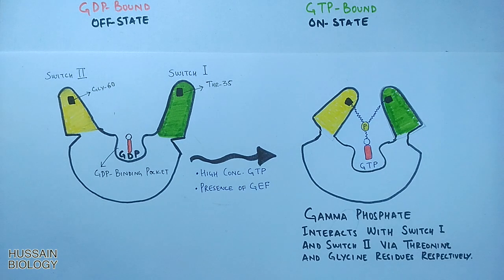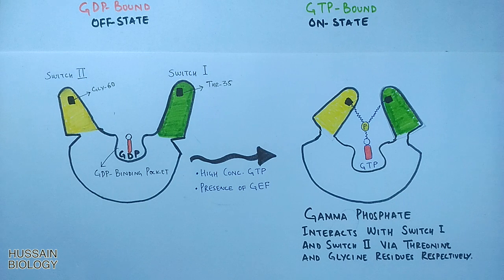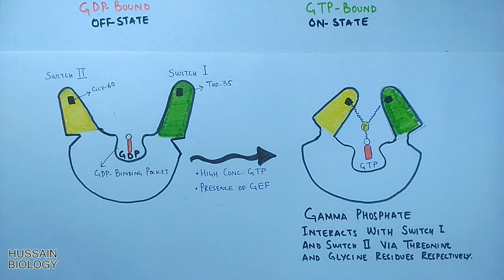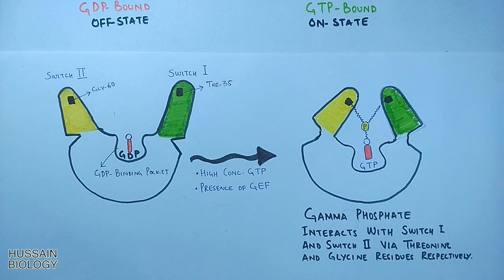The switch1 and switch2 are brought closer, which brings about the conformational change within the G-protein, thus rendering the G-protein into its active state which then mediates the signal forward. This is how the G-protein works and shows its GTPase activity.